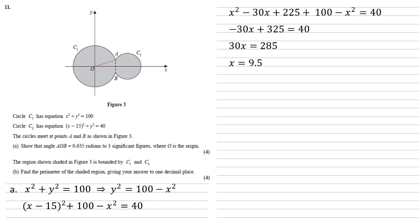Now if we consider the triangle O, A and then the point on the x axis where A and B crosses, we can see we've got a hypotenuse of 10 because the equation for C1 is equal to 100, so the radius must be the square root of this. We've just worked out that x is 9.5, so that's the distance between O and the line AB.